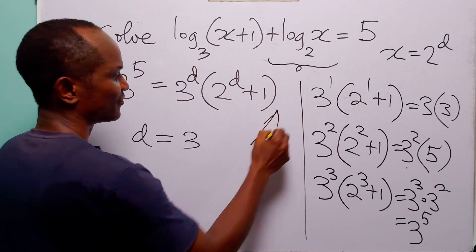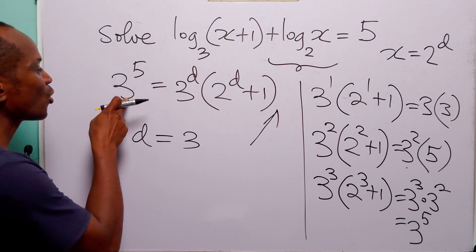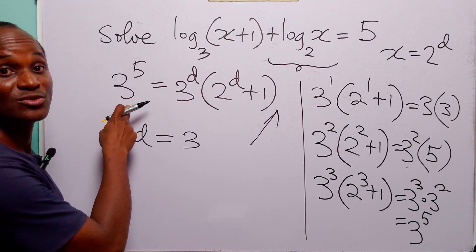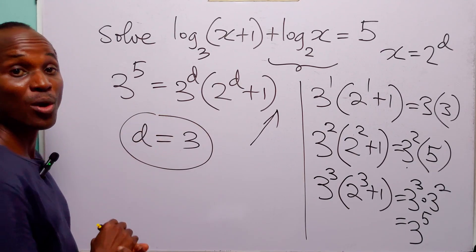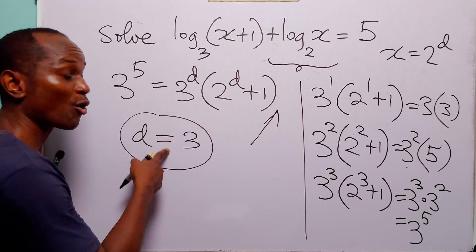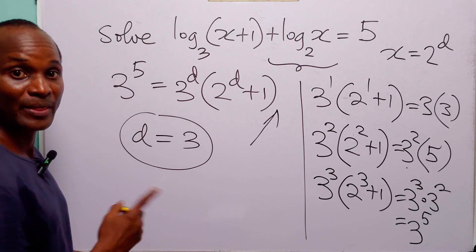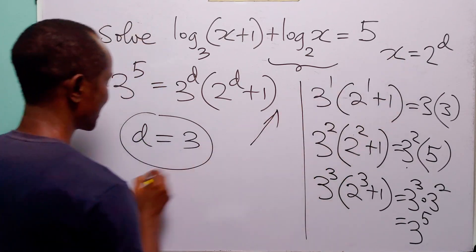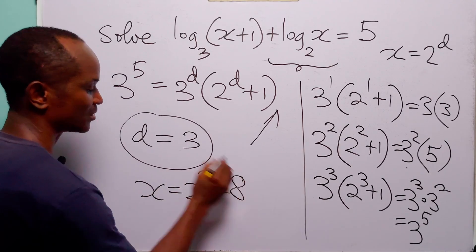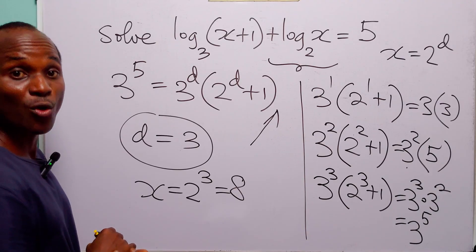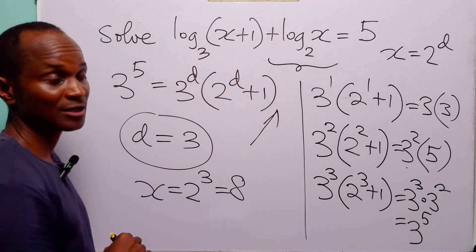Notice that the right-hand side of this equation is monotonically increasing, so it would only meet the value of 3 to the power 5 once, at the point d equal to 3. This is the only value of d that satisfies this equation. To find the value of x, we have x is equal to 2 to the power 3, which is equal to 8. So 8 is the only value of x that satisfies this logarithmic equation.